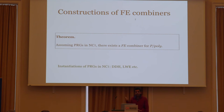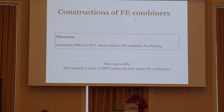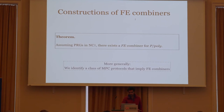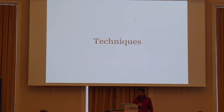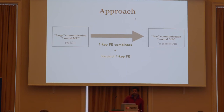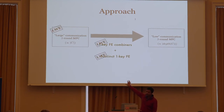We get FE combiners for polynomial circuits from PRGs in NC1 — I'm not going to talk about this in detail. We can instantiate PRGs in NC1 from DDH, learning with errors, and so on. Our result is a little more general: we identify a class of MPC protocols that actually imply FE combiners, giving some equivalence between FE combiners and a class of MPC protocols. Now for techniques: we use a large-communication two-round MPC protocol and combine it with FE combiners and succinct single-key FE schemes to get a low-communication two-round MPC protocol. This transformation is generic, and all three ingredients can be instantiated from learning with errors.